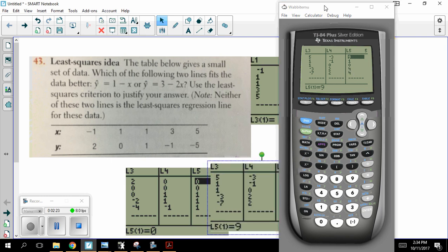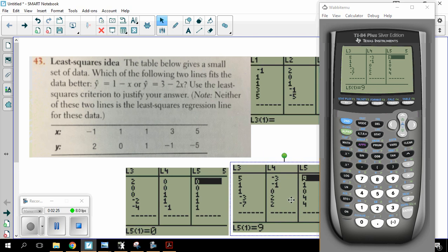And of course, you don't have to be a stat teacher to know that 18 is bigger than three. So this first line, this first Y hat equals one minus X, that's the better of the two. But they noted neither one of them was actually the least squares regression line.